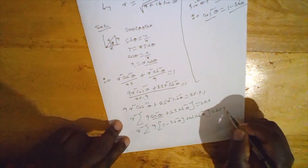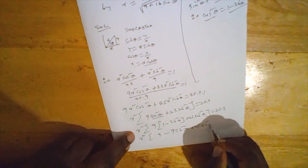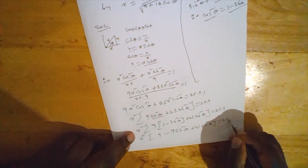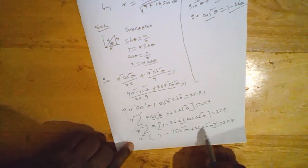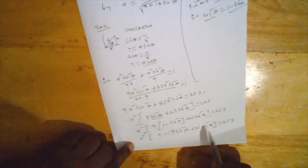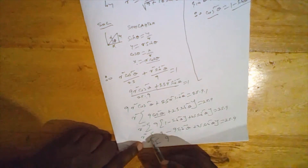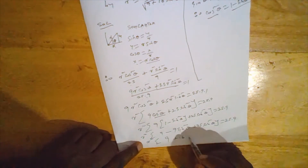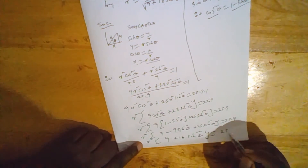Expanding the bracket, we have r squared times the quantity 9 minus 9 sin squared theta plus 25 sin squared theta equals 25 times 9. Combining like terms, minus 9 sin squared theta plus 25 sin squared theta gives 16 sin squared theta, so r squared times (9 plus 16 sin squared theta) equals 25 times 9.